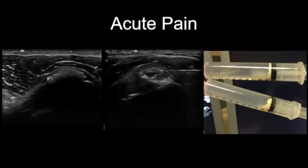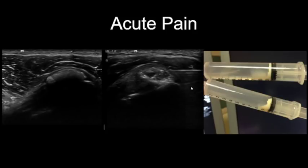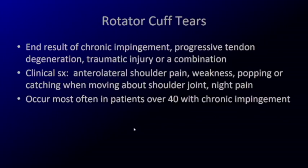Here's another example where the deposit is shadowing — still calcific tendinosis or tendinitis. What you can do is advance a needle into the center of this and lavage it with lidocaine and/or saline. As the fluid backs into the syringe, you can see the backwash of calcium hydroxyapatite crystals — you can actually remove this. The remainder you can repeatedly fenestrate or puncture, and then give an injection into the bursa to treat the associated bursitis.